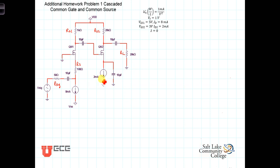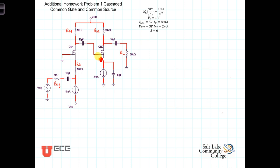Both transistors are biased using constant current sources, and we'll take that into account in just a second. The first stage is a common gate — the gate is grounded with the signal applied to the source. The second is a common source, where the input signal for the second stage is coming from the drain of the first going into the gate of the second.